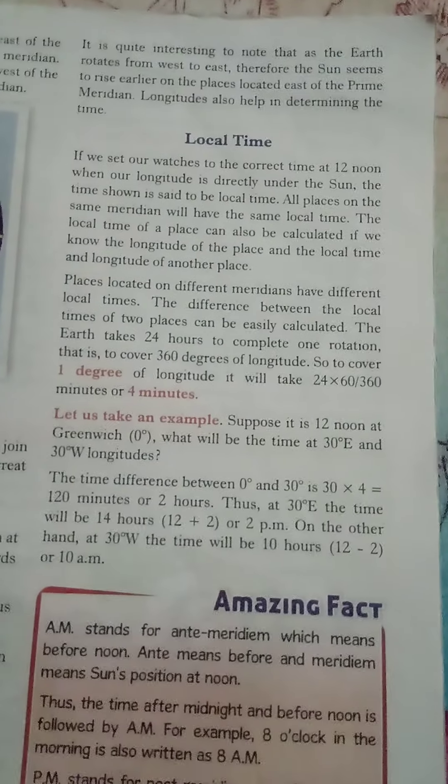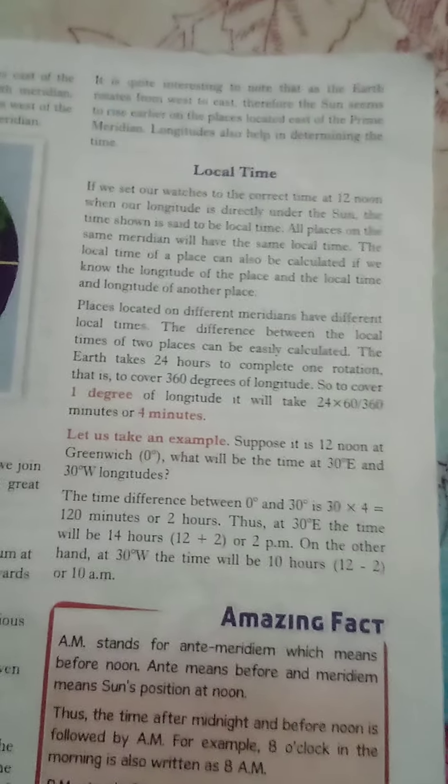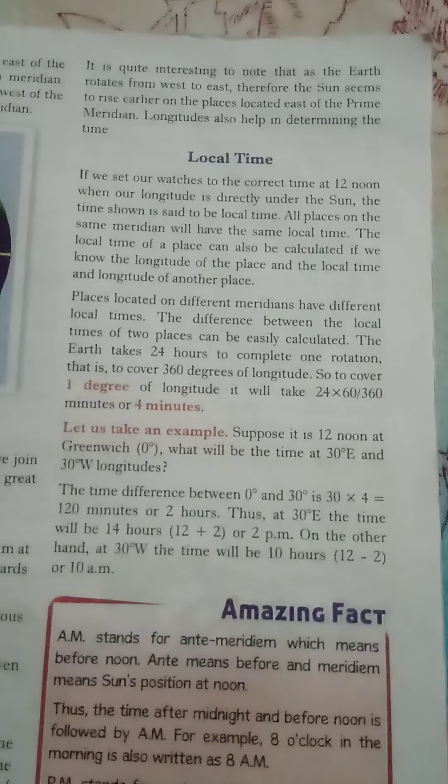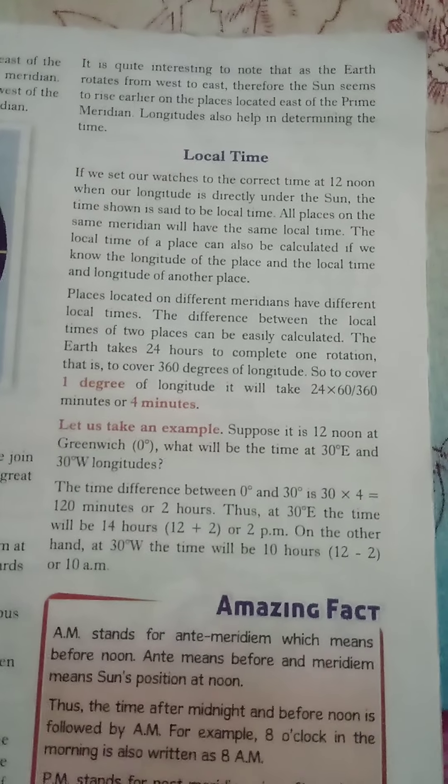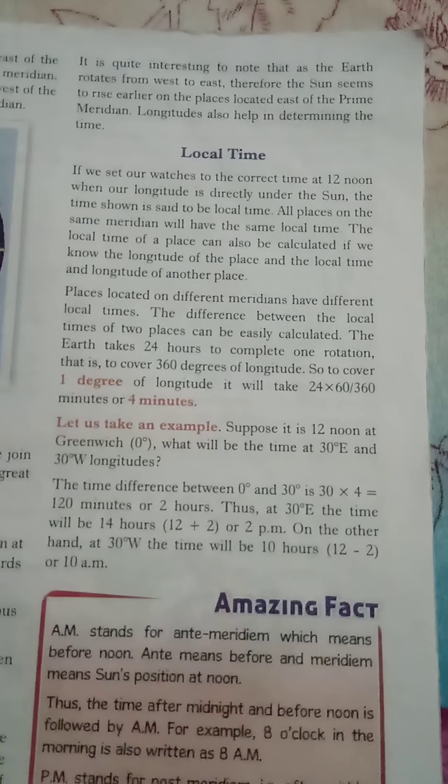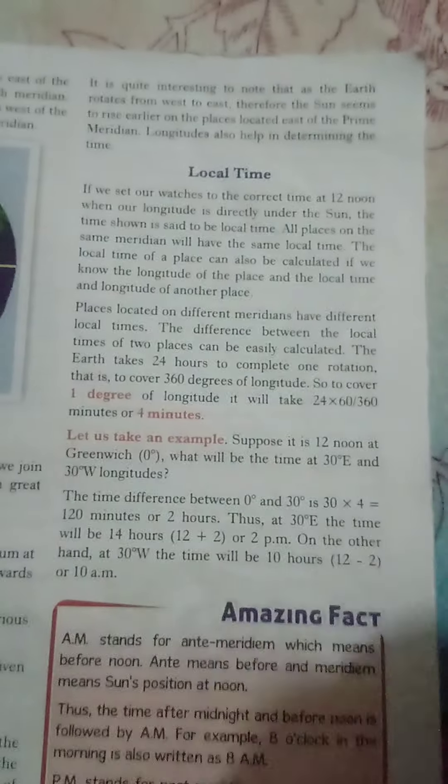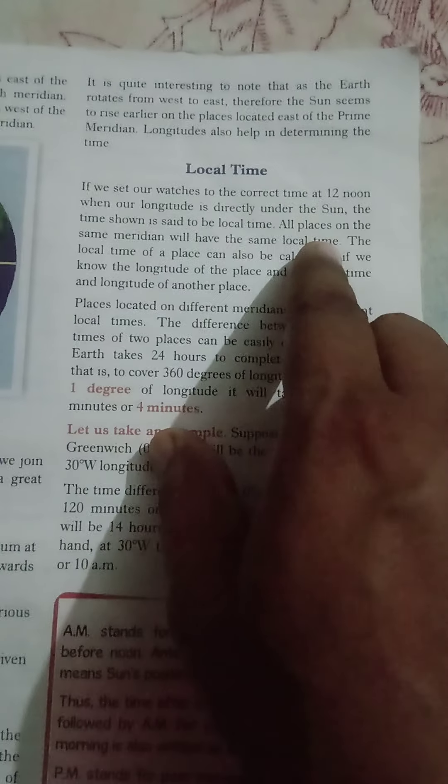If we set our watches to the correct time at 12 noon, when our longitude is directly under the sun, then our watch will be set at 12 noon. This time is called local time. All places on the same meridian will have the same local time.